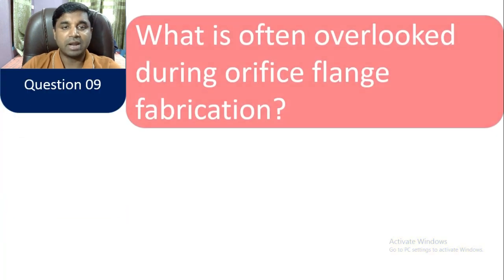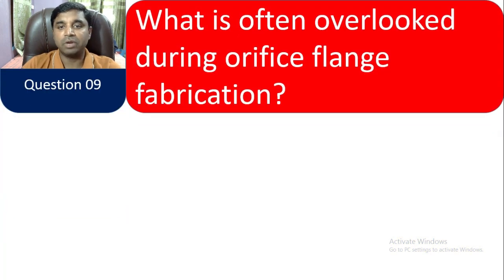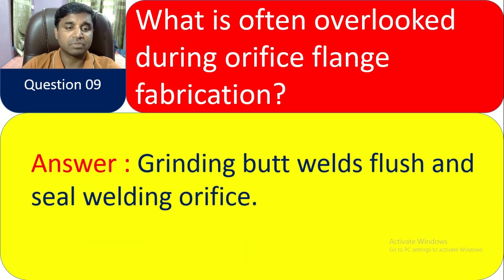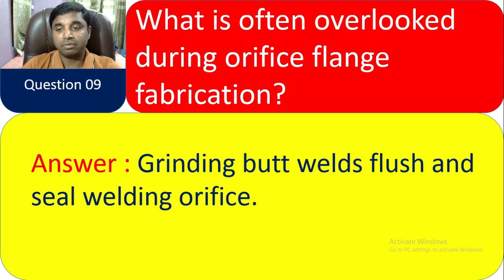Question 9: What is often overlooked during orifice flange fabrication? The answer is grinding bar-weld flash and seal welding the orifice. You have to grind the bar-weld flash and also grind the seal welding on the orifice.